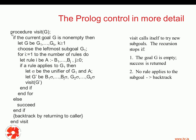G stands for a goal, which is indeed a node in the Prolog search tree. If the current goal G is non-empty, then we split G up into sub-goals G1, G2, up to GK.